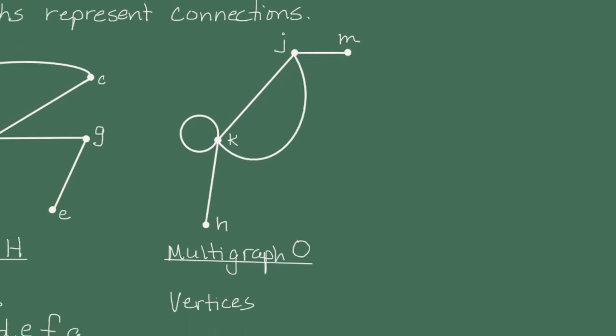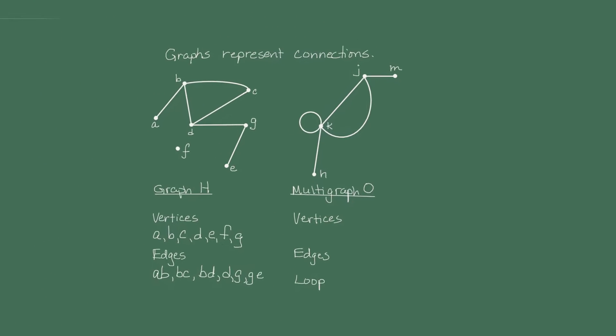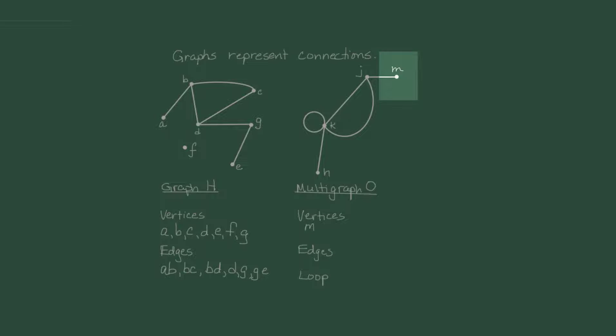Let's list the vertices of multigraph O. Multigraph O has vertices M, J, K, and H.